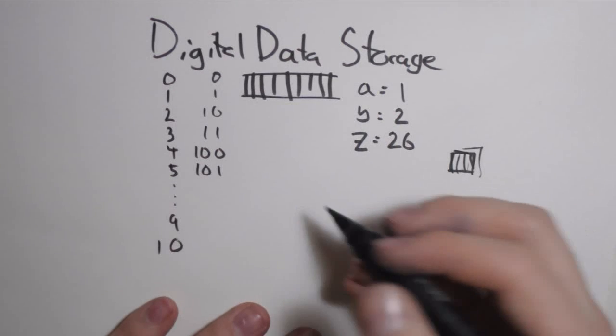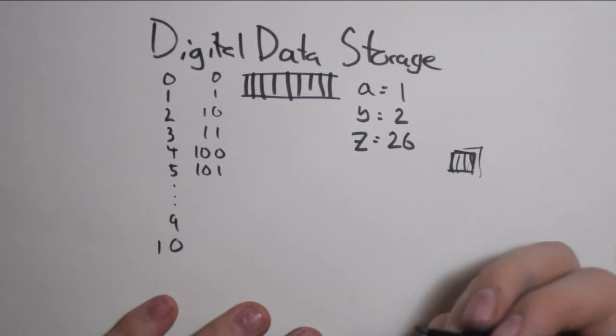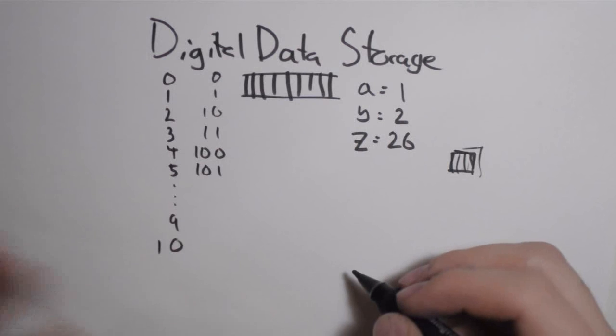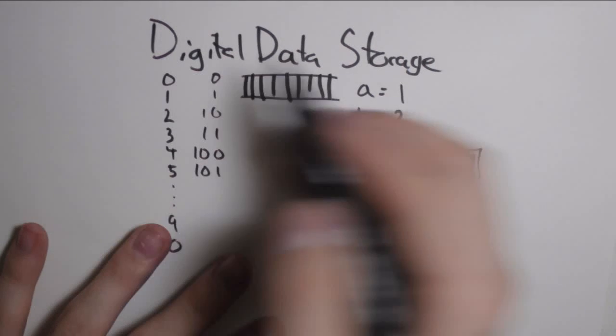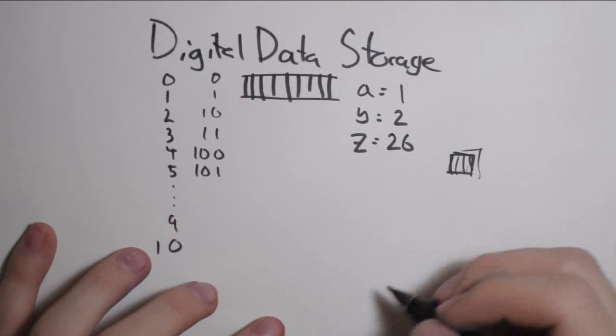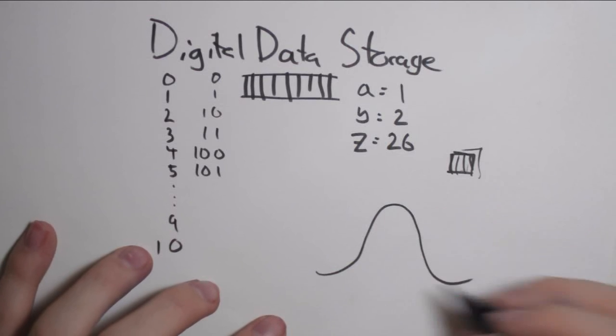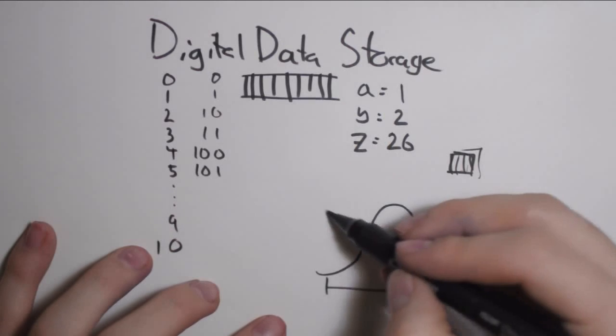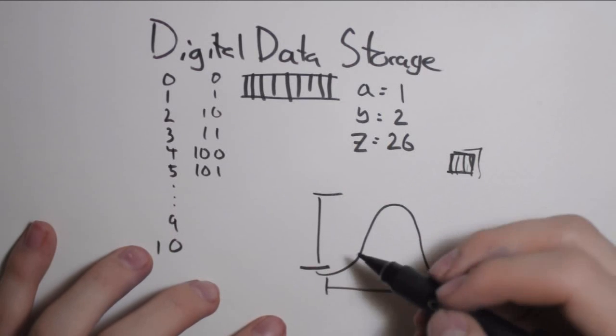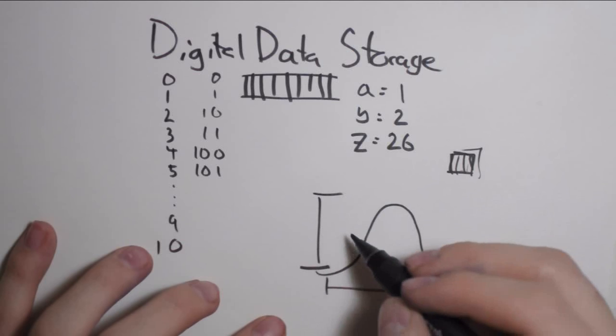And then the last interesting one is sound. Sound basically works using vibrations in the air, that's what sound is. Those are represented as waves. Waves have two properties: wavelength, which determines the pitch, and amplitude, which determines the loudness.